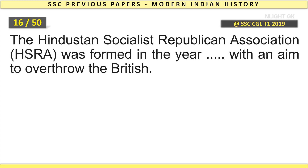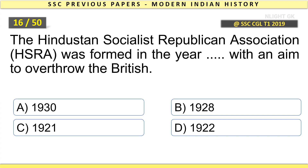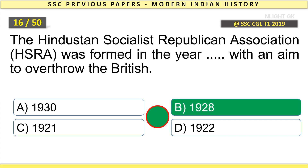The Hindustan Socialist Republican Association, HSRA, was formed in the year 1928 with an aim to overthrow the British.